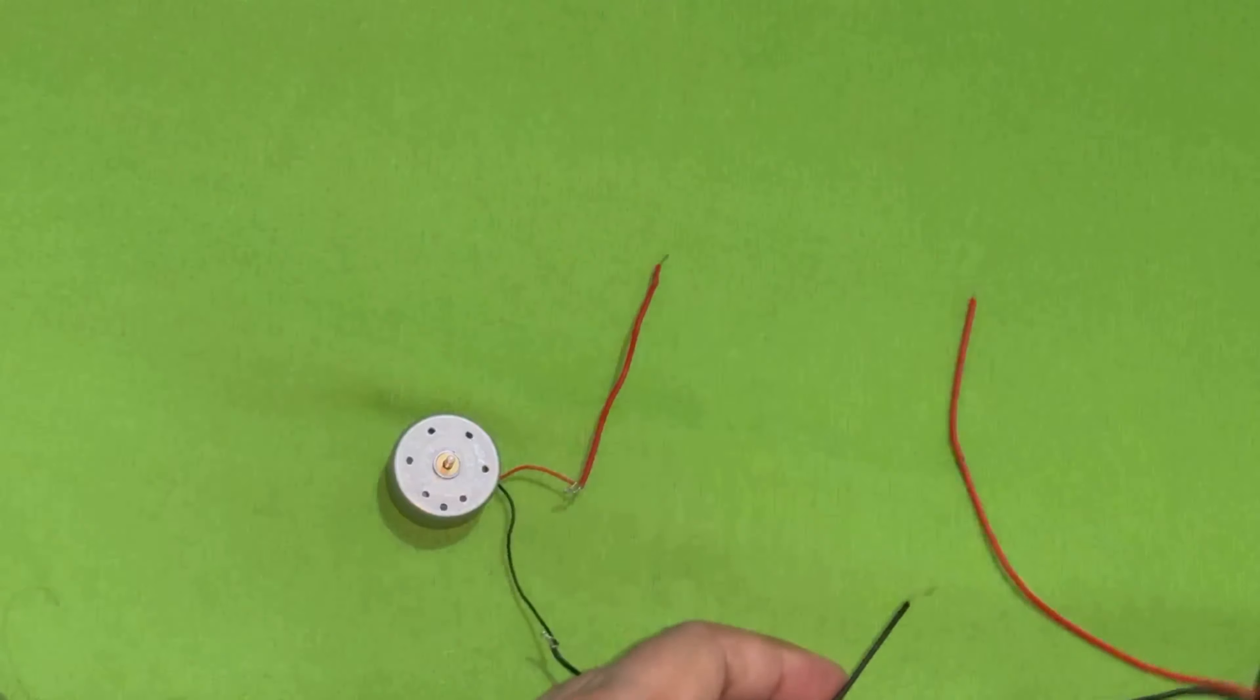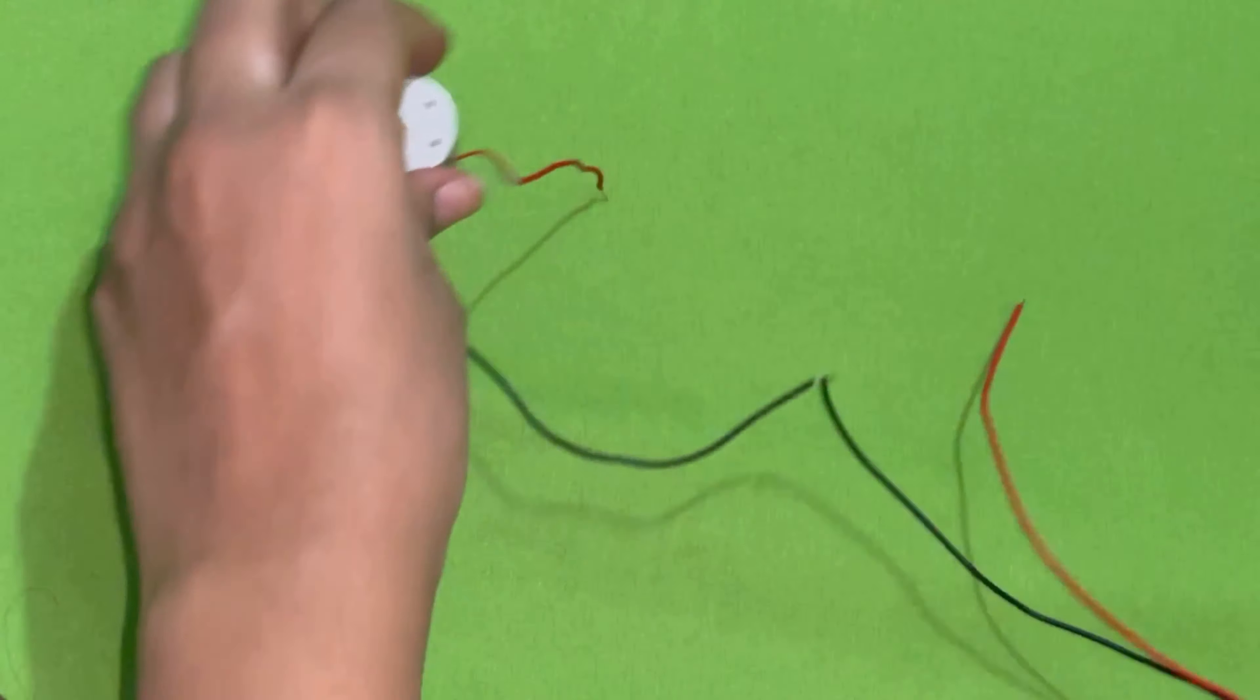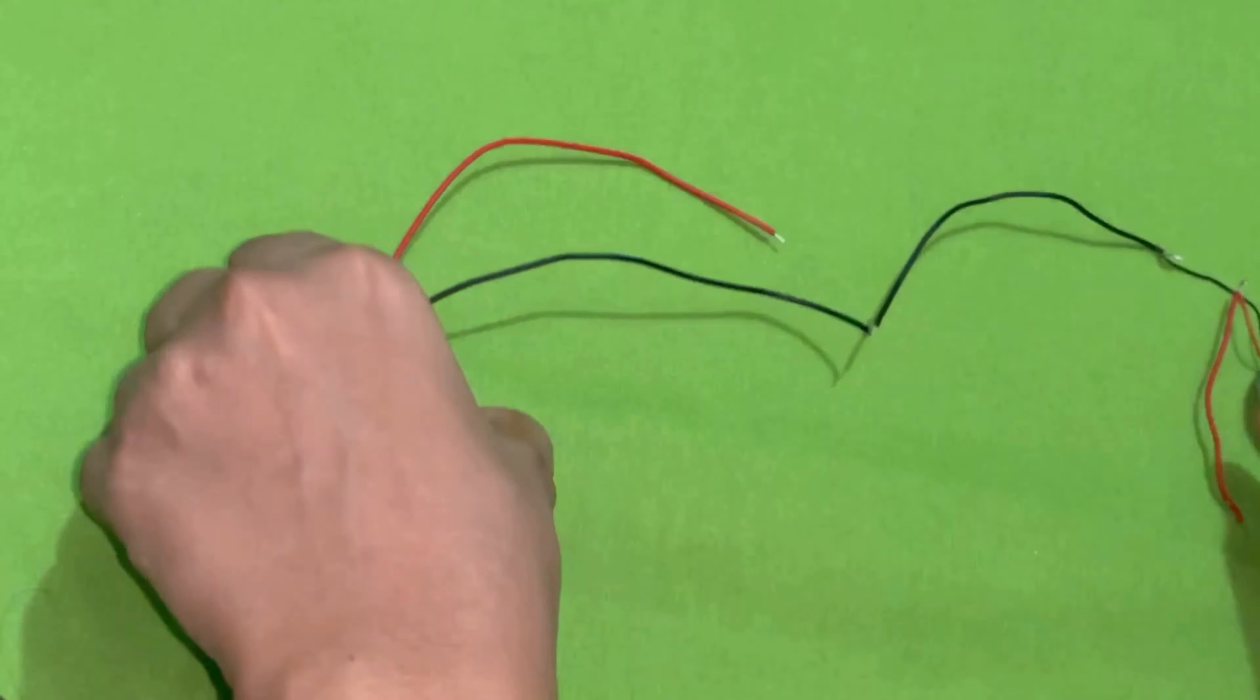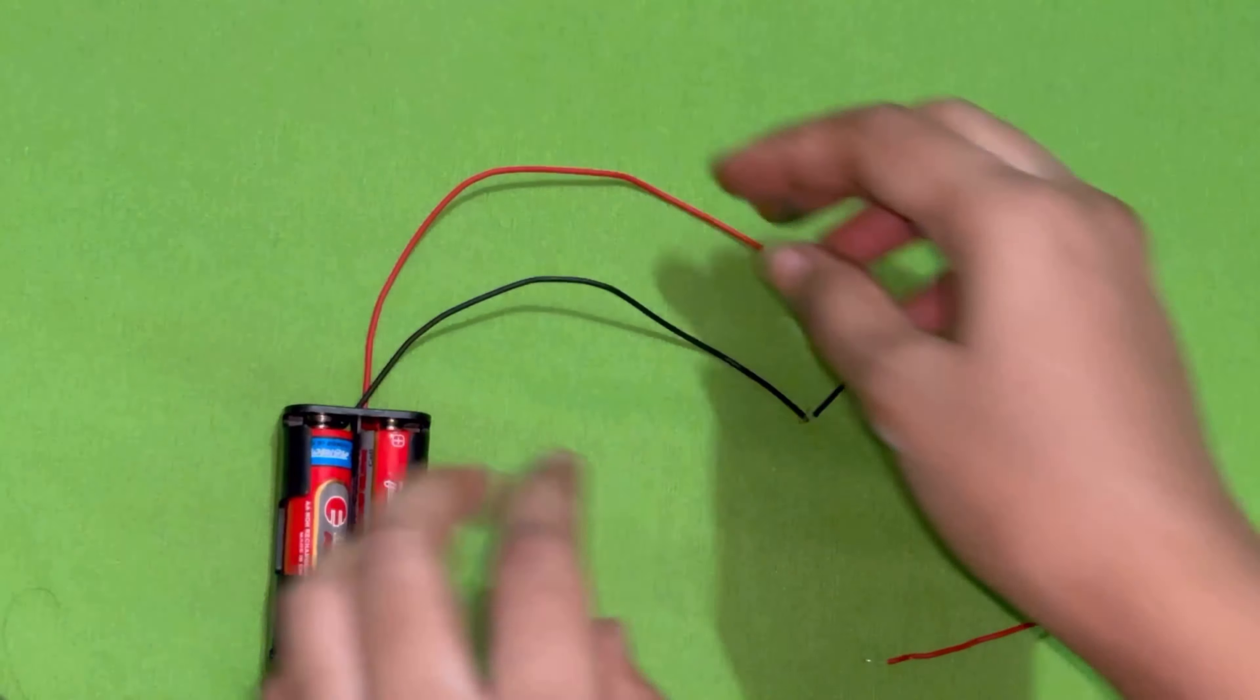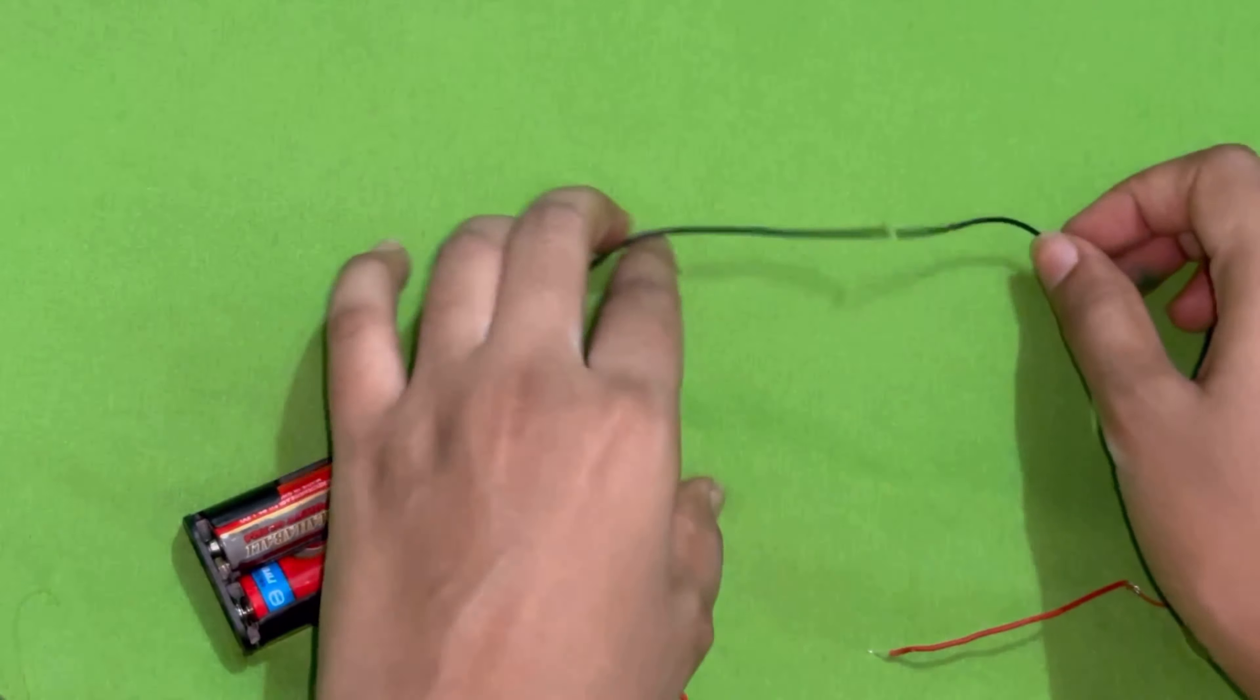Because we are doing this with the switch, I will join with black. I will connect the battery connector with black wire. We have to connect almost. Now we have our red wires. Both of the red wires are open. One second.